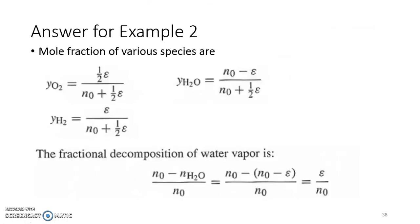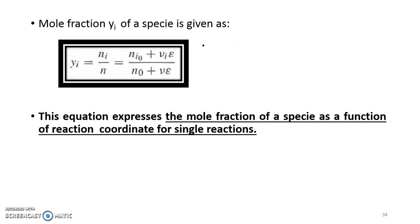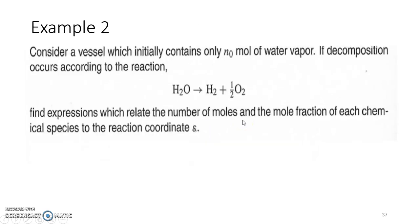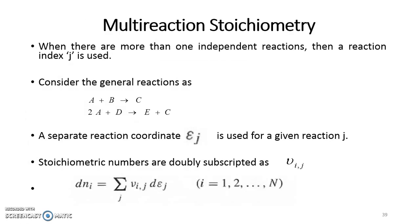A very important concept about extent of reaction: a common misconception is that epsilon cannot go beyond 1. In fact, extent of reaction is in units of number of moles, and it can go even beyond 1 — it all depends on stoichiometry and initial number of moles. For example, if initial moles of methane is 2 and H2O is 3, the limiting factor is H2O, and you can't go beyond 1 for epsilon 1 because after epsilon 1 equals 1, the final number of moles of H2O would go below 0. Now suppose only a single reaction is taking place: 2A plus D gives E plus C.